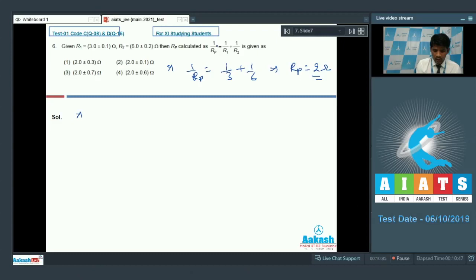Yet again, differentiating this part, I would say delta Rp divide by Rp square must be written as delta R1 divide by R1 square plus delta R2 divide by R2 square.